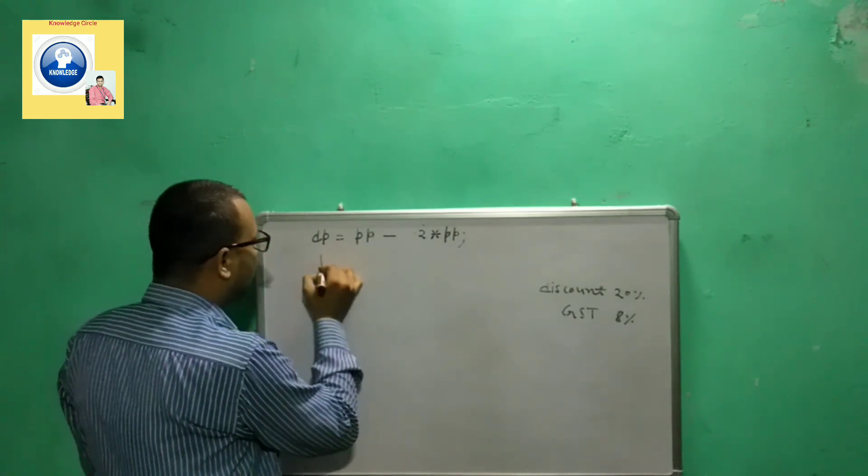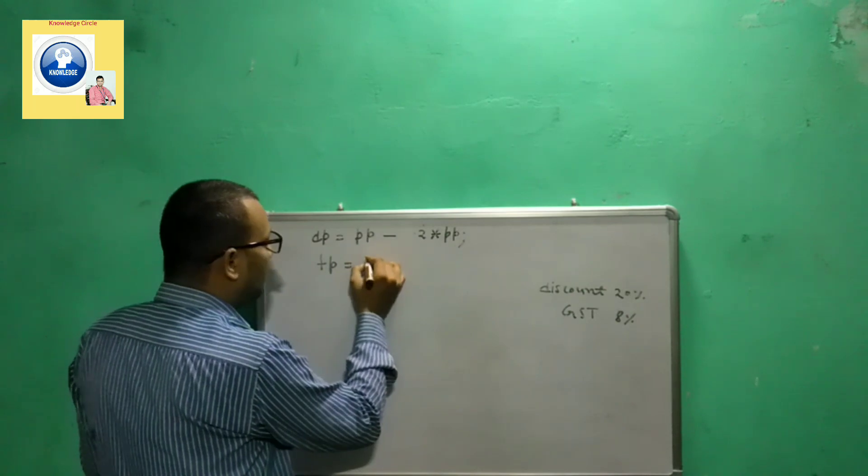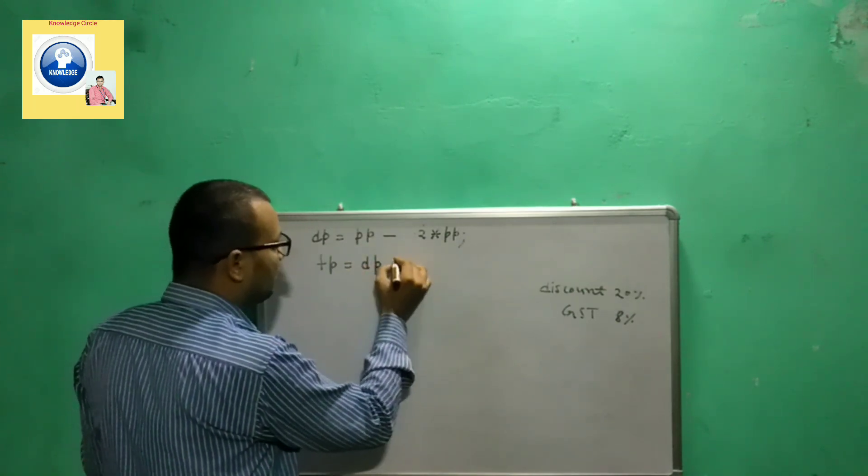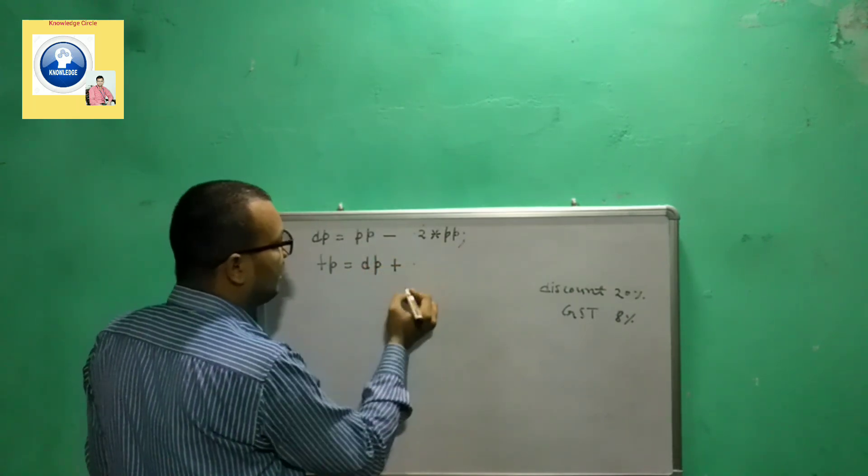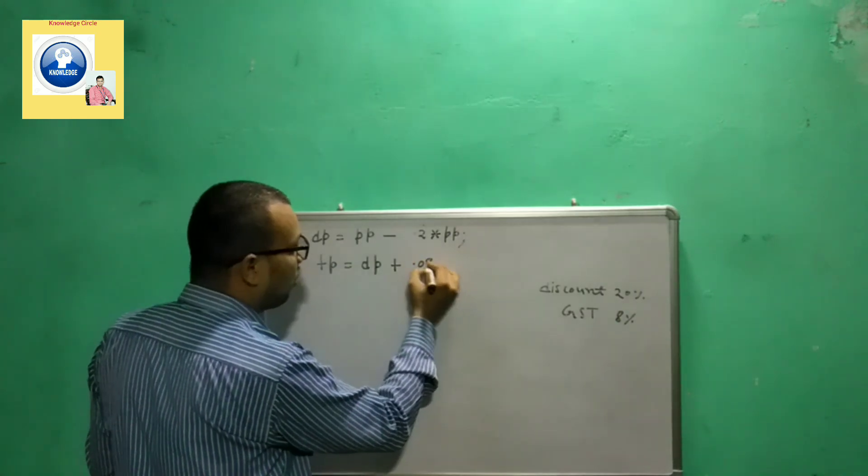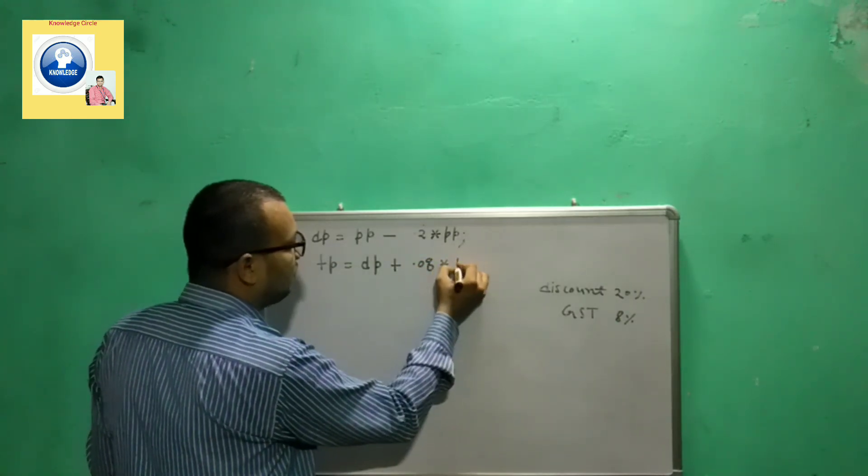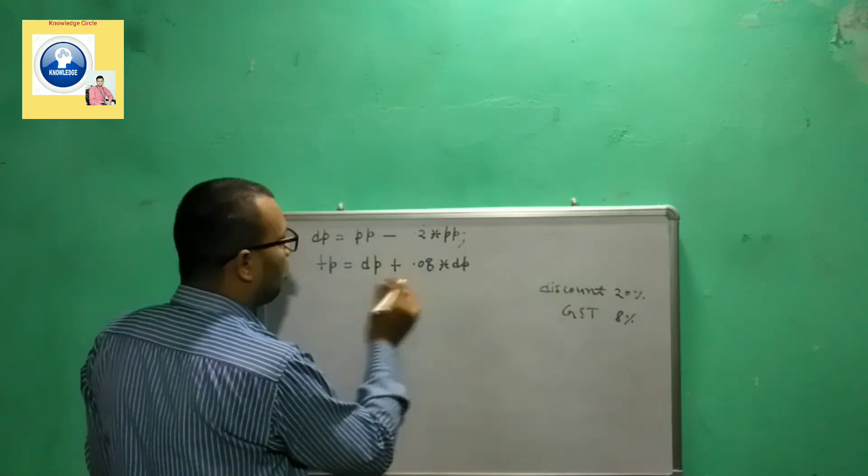Final price: FP equals DP plus 0.08 into DP. It will be calculated on the discounted price and you get the final price.